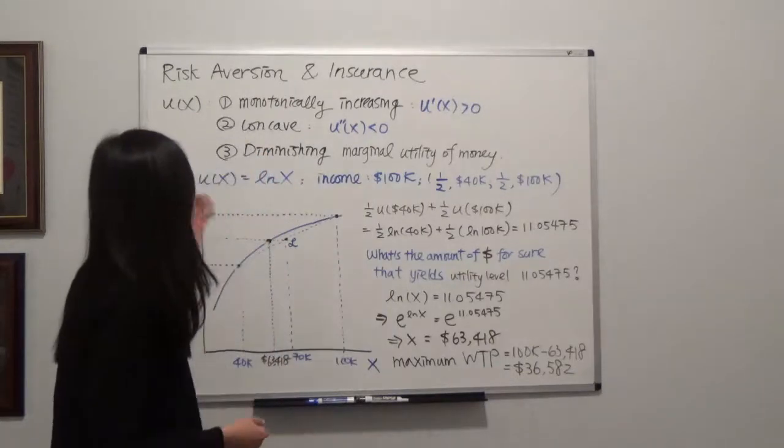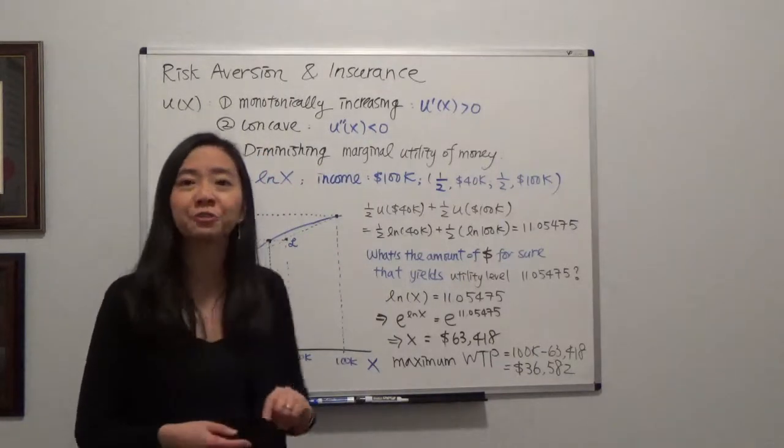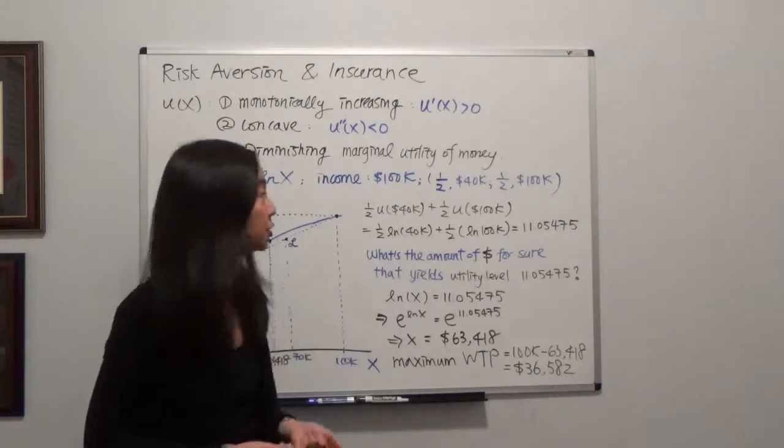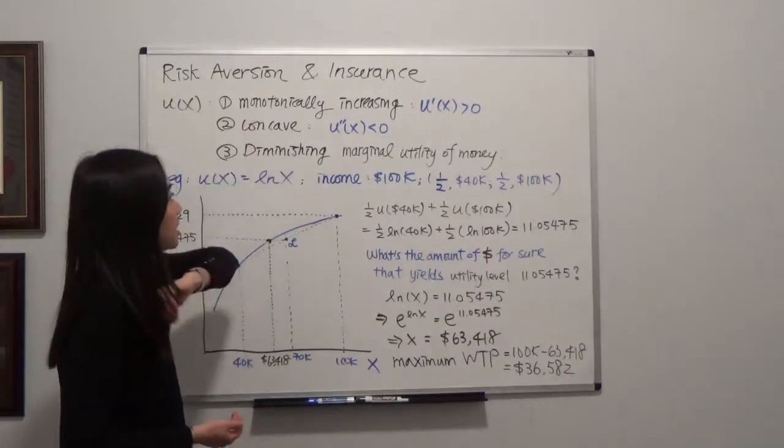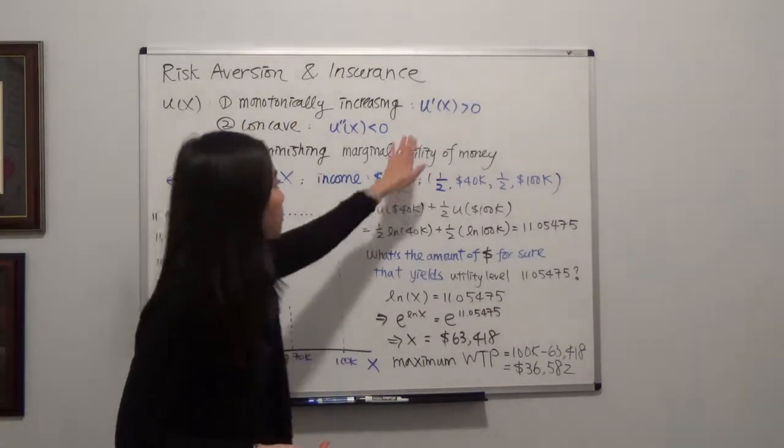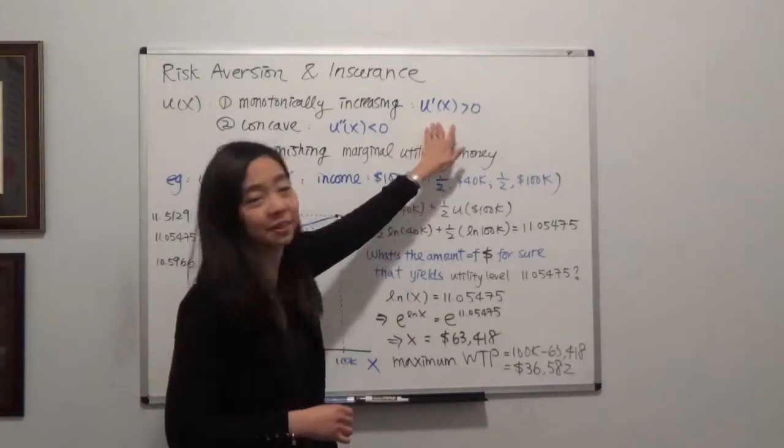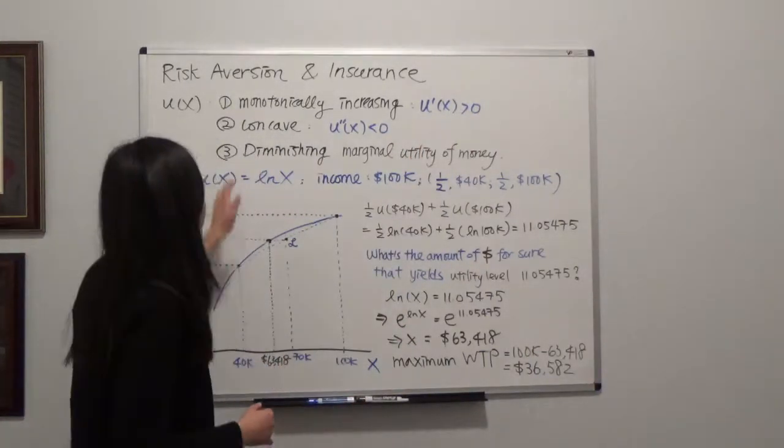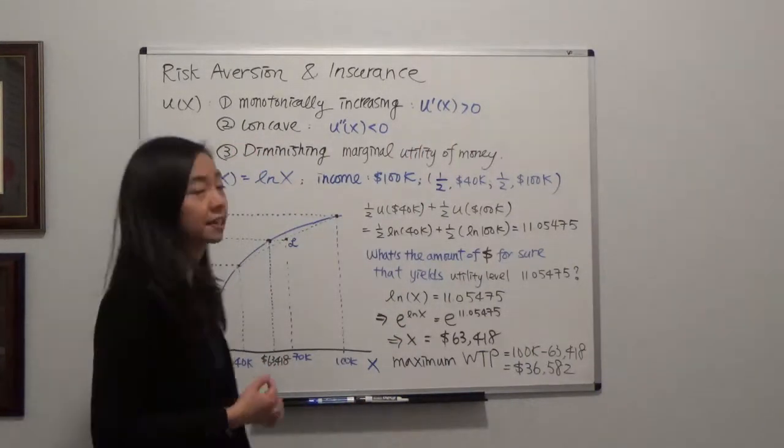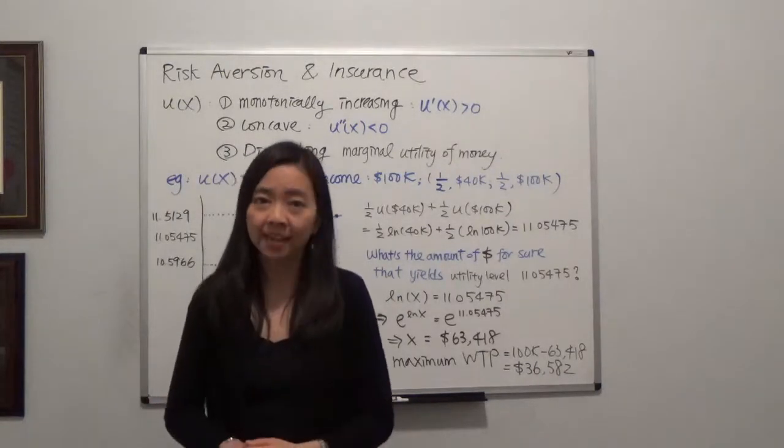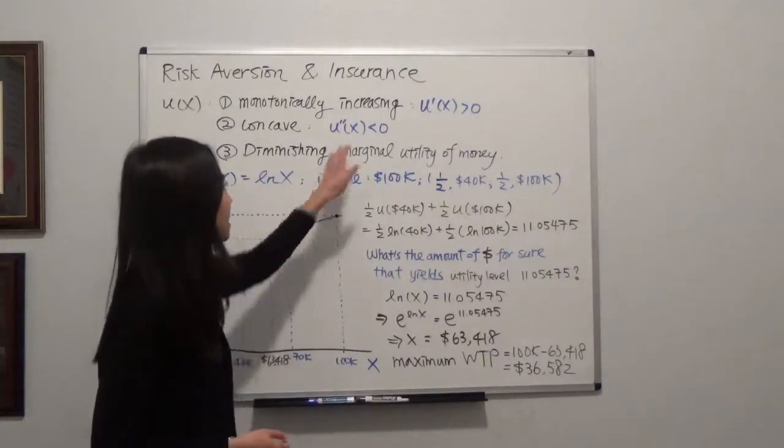Last time we talked about if you have a risk-averse preference, then your utility function is going to be monotonically increasing, meaning if you take the first order derivative, you're going to get something positive. At the same time, your utility function is going to be concave, meaning if you take the second order derivative, you're going to get something negative.